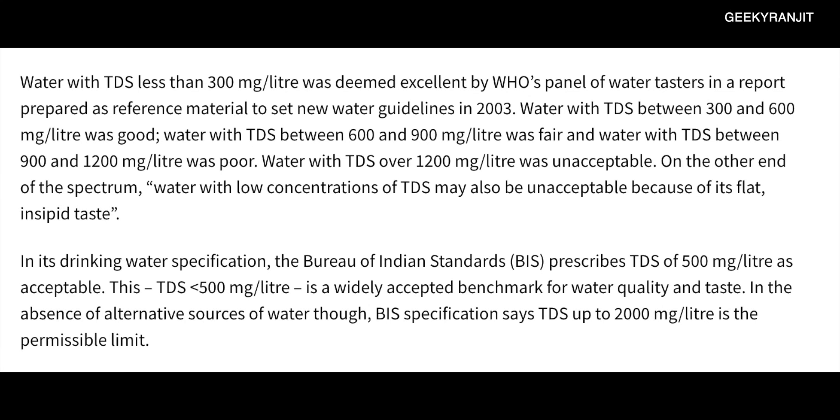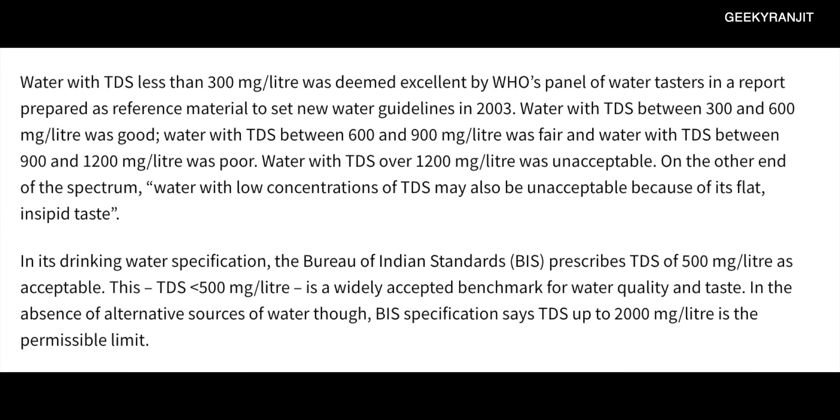According to WHO, water with TDS below 300 mg per liter is deemed excellent. But that doesn't mean it should go very very low — that's the misconception we as Indians have. The ideal is about 150 mg to 300 mg. Water between 300 mg and 600 mg is also good according to them. Between 600 mg and 900 mg is fair, and above 1200 mg is bad.